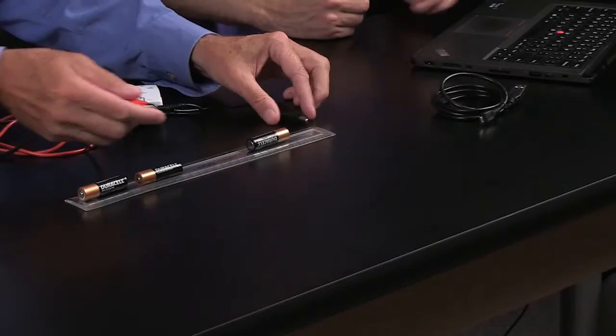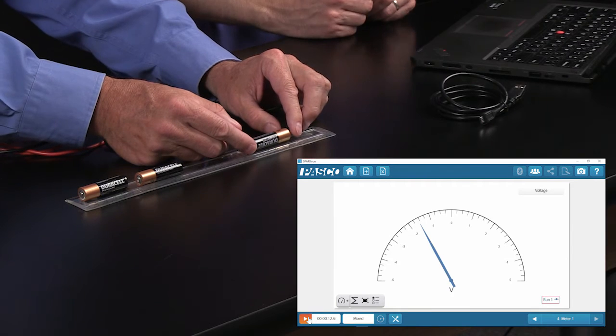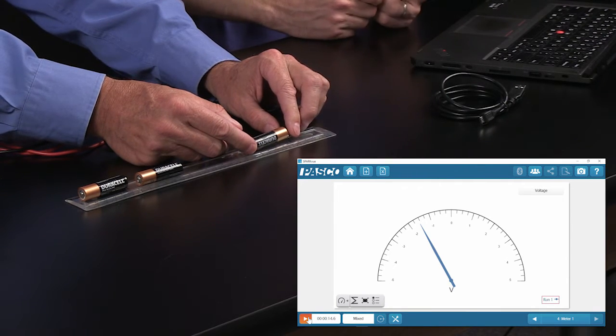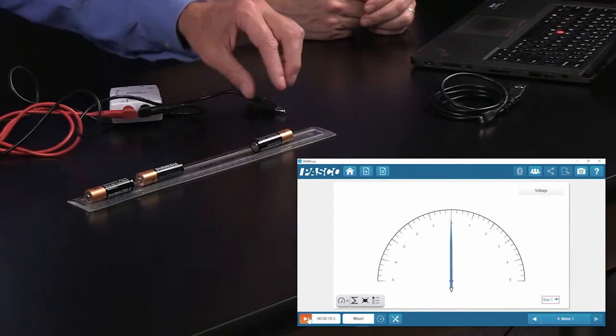Now your students might accidentally hook it up the wrong way, which is what I'm going to do. And when that happens... Now I get a negative one point five volts. Awesome. So now we can know, not only from the sensor, what's plus and minus, and the battery, what's plus and minus, but from the measurements, what's plus and minus.